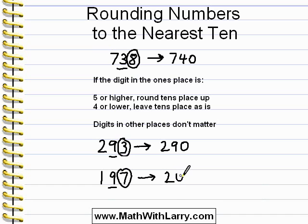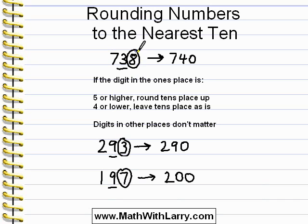Make sure you see how that works. Compare that to our first example where we had an 8 in the ones place and the 3 just became a 4. This is just a very basic introduction to rounding. In later lessons, you'll learn how to round to different place values, such as hundreds or thousands.